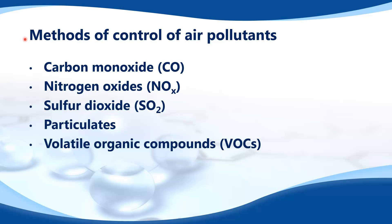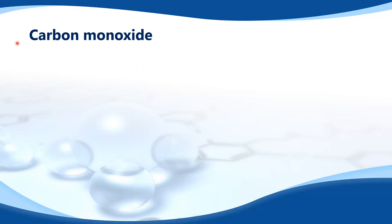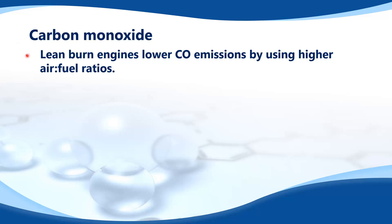Methods of control of air pollutants. In this video we look at methods of control for the following air pollutants: starting with carbon monoxide, then the oxides of nitrogen, sulphur dioxide, particulates, and finally volatile organic compounds. So we'll start with carbon monoxide.